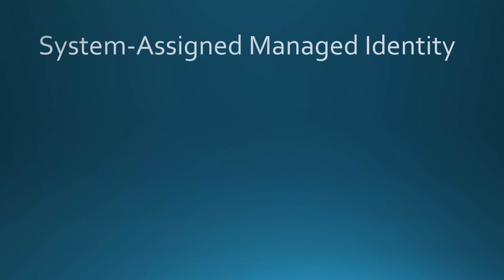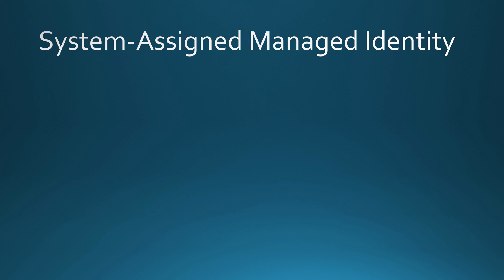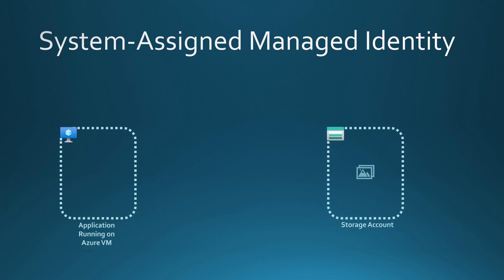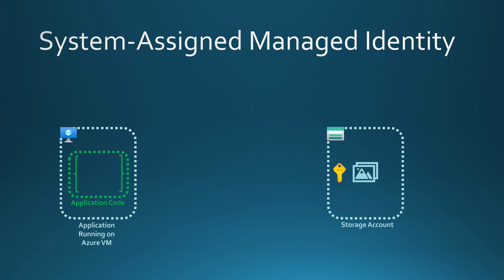Let's first cover system assigned managed identity. Let's imagine a situation where we have an application running on a virtual machine, and then we have a storage account. In that storage account, we have some image files that we would like to retrieve as part of our application logic. Now we have to figure out how we can get those image files. One very traditional way would be using storage account keys — we could get the keys from the storage account, use them as part of our application logic, and then retrieve those image files.